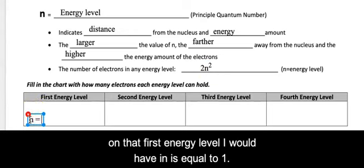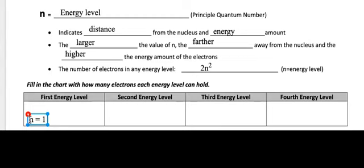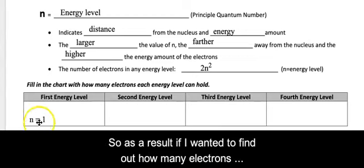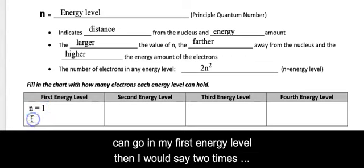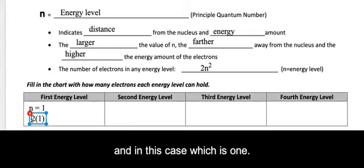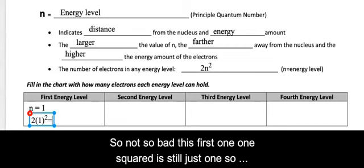On that first energy level, I would have n is equal to 1. So as a result, if I wanted to find out how many electrons could go in my first energy level, then I would say 2 times n, in this case, which is 1, squared. And then I would just do the math. So not so bad.